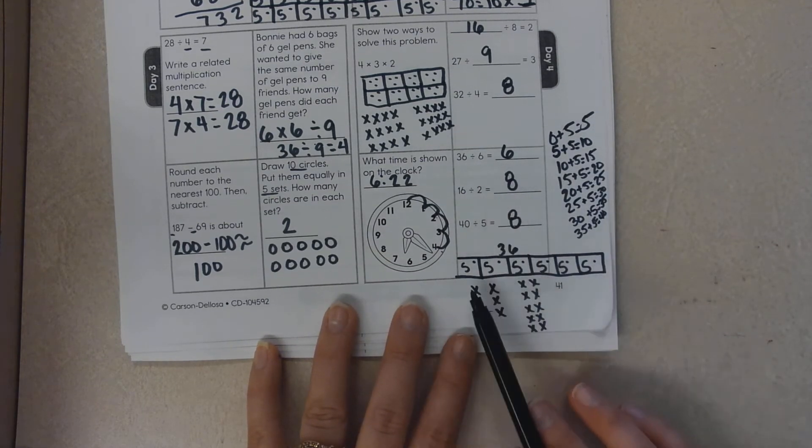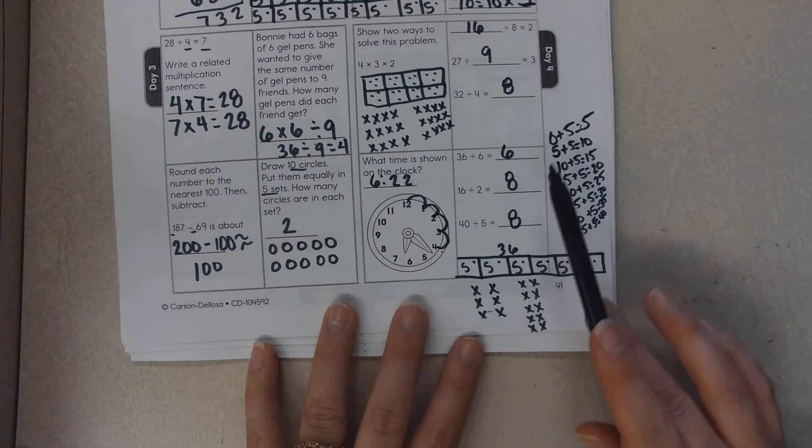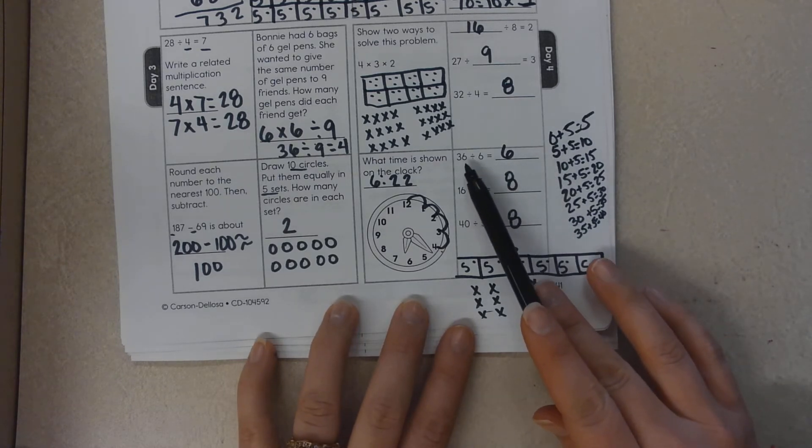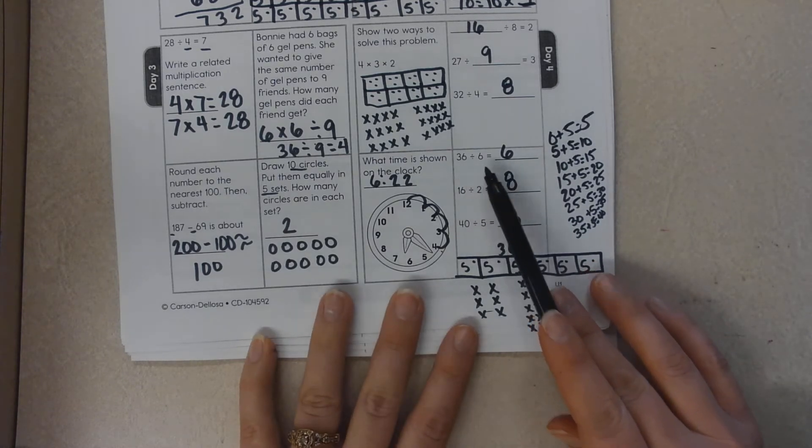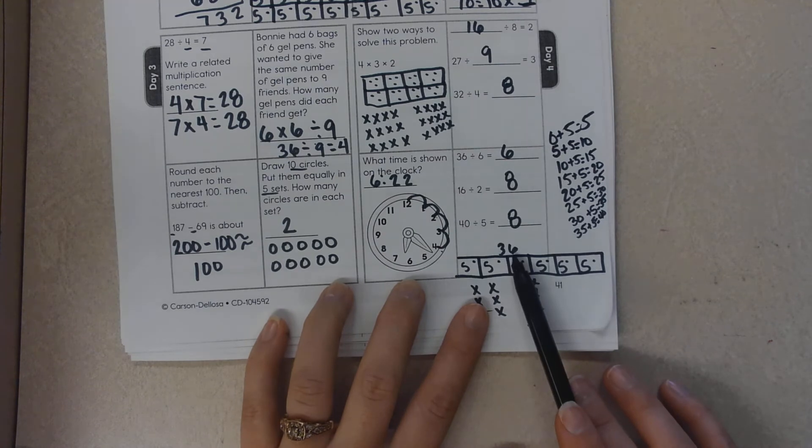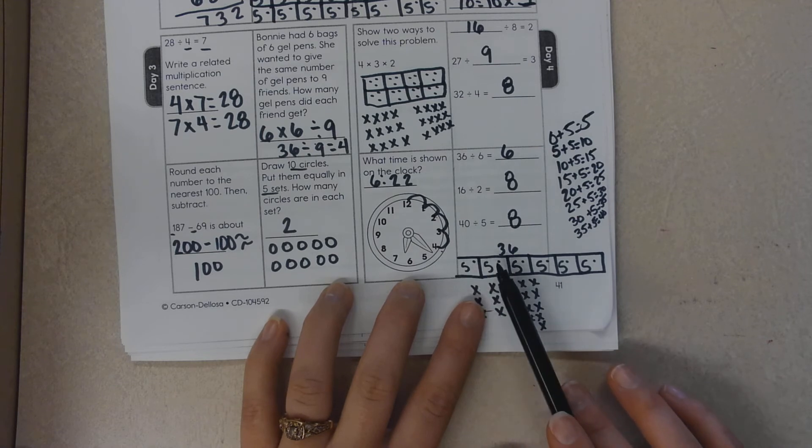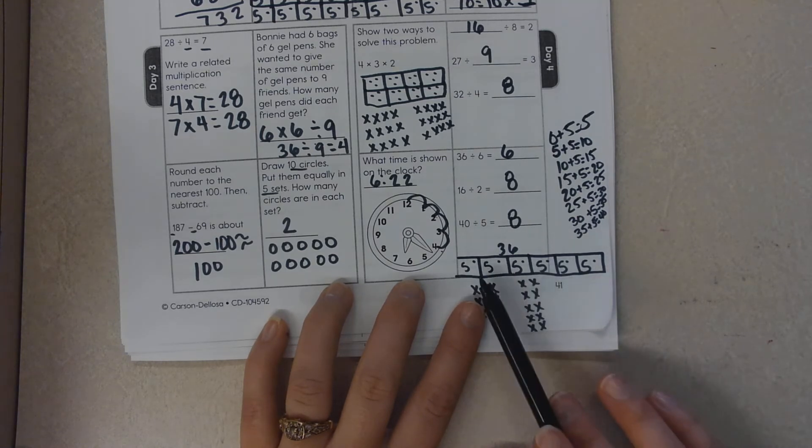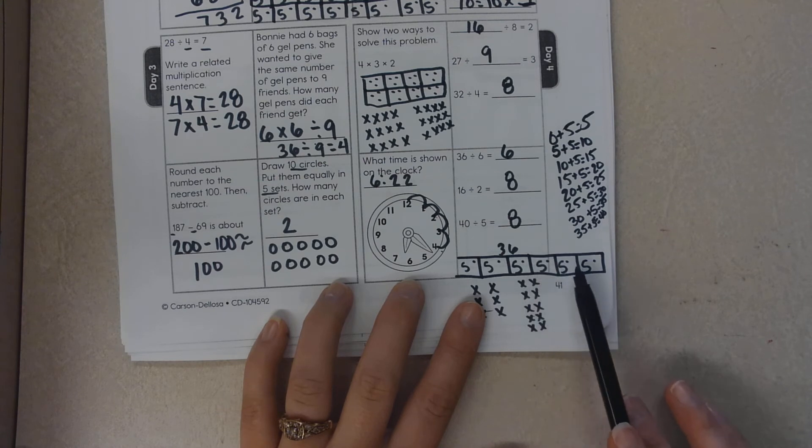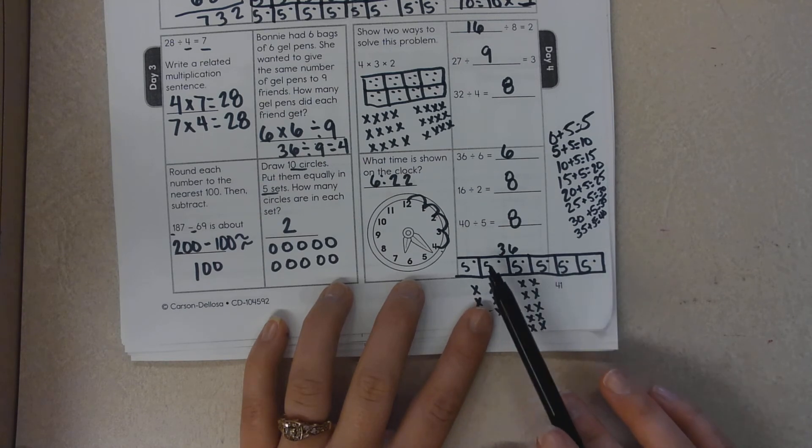So down here I illustrated one way to draw 36 divided by six. I have a total of 36, I cut it into six. And then I counted by fives and ones up to 36. So six sixes equal 36.